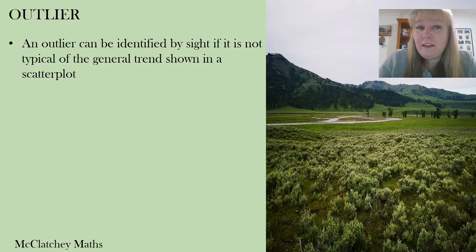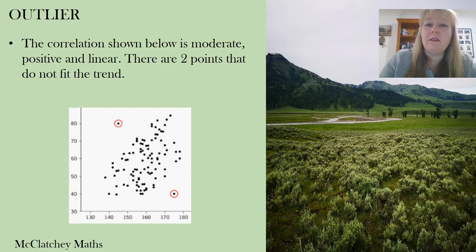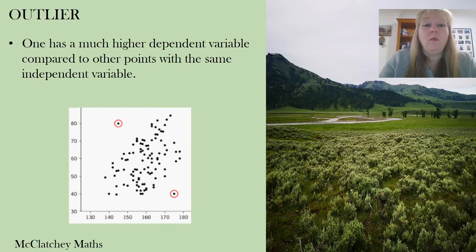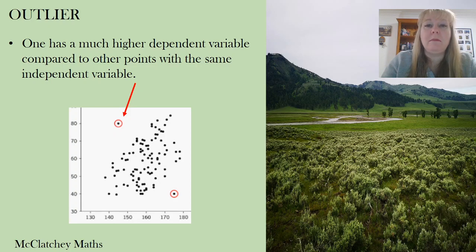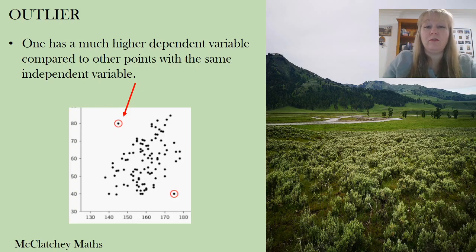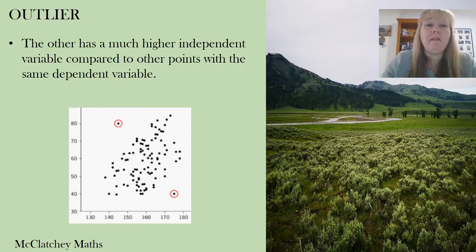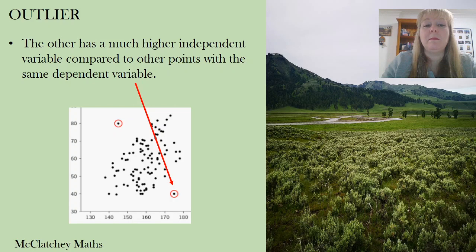Now we're getting to the pointy end of the video — outliers. An outlier can often be identified just by looking at your scatter plot. In the example shown, we can see two points that don't fit the general trend and are sitting way away from everything else. One has a much higher dependent variable compared to all other points with the same independent variable, and the other has a much higher independent variable compared to all other points with the same dependent variable.